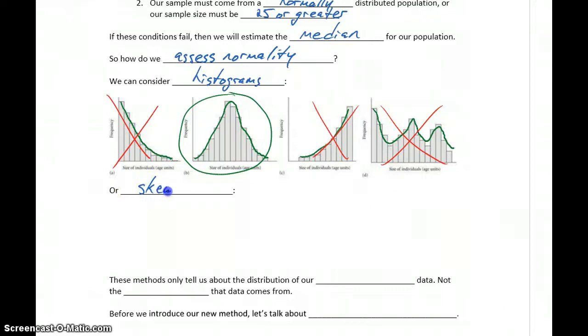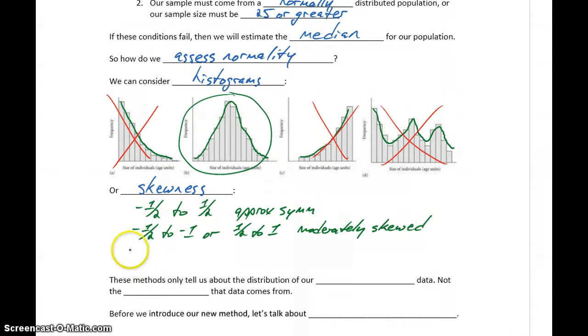So another method is to consider skewness. We introduced before the idea that if our skewness ends up being negative one-half to one-half, our data is approximately symmetric. If we end up with values from negative one-half to negative one, or positive one-half to one, then our data is moderately skewed. And if we have values that are less than negative one or greater than positive one, then our data is highly skewed.